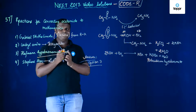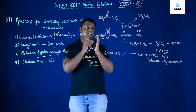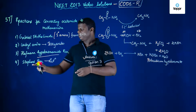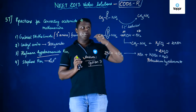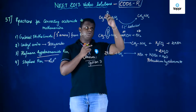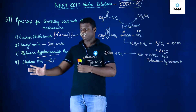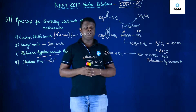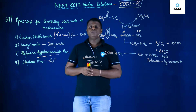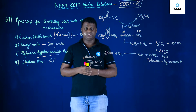Normally, the Hoffman bromamide reaction is used for the conversion of an amide to an amine containing one carbon atom less. Stephens reaction would convert CO to CH2, which is not applicable here. So the correct answer for this particular question is option number 3. For more such videos, please like, comment, or subscribe.